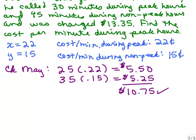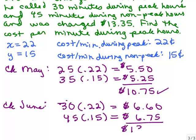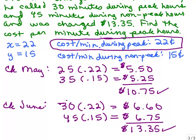Now let's see what it says about June. In June he used 30 minutes during the non-peak hours, and that was 22 cents a minute, so that's 6 dollars and 60 cents. He also used 45 minutes during the non-peak hours, which was 675. We add that up, and that's 1335. The original problem said it was supposed to be 13 dollars and 35 cents. Therefore this must be correct, 22 cents per minute during peak, 15 cents during non-peak. The cost per minute during peak was 22 cents.